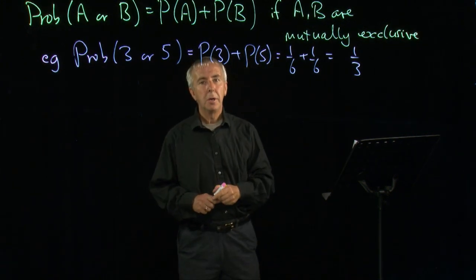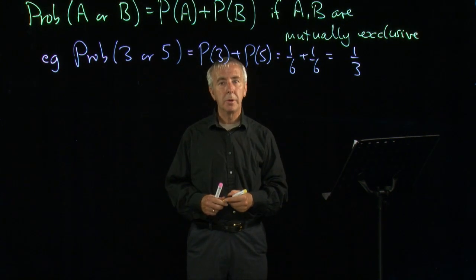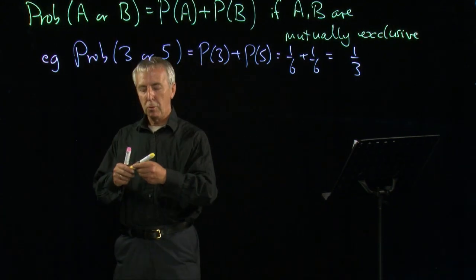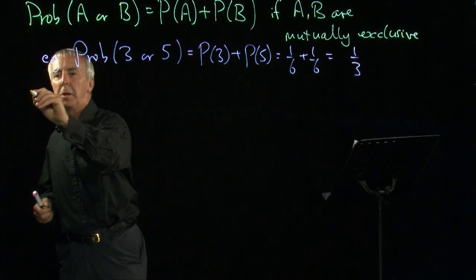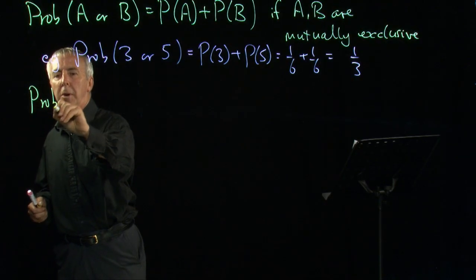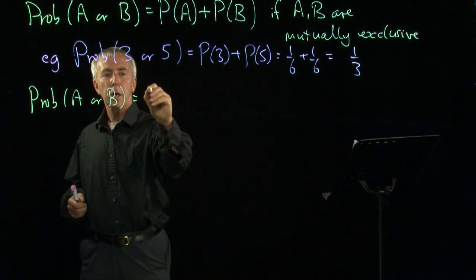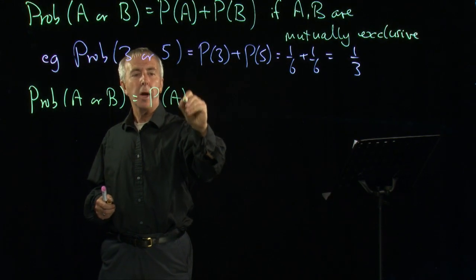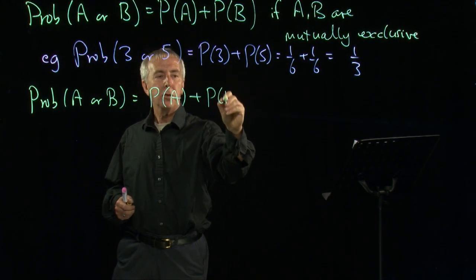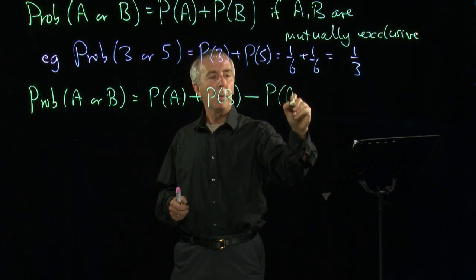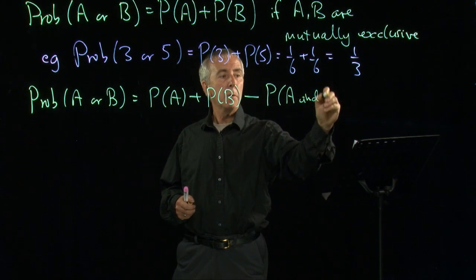Sometimes, however, two different outcomes could possibly occur together. And then we need a different rule, a more complicated rule, which is that the probability of A or B is the probability of A plus the probability of B minus the probability that they can both happen.